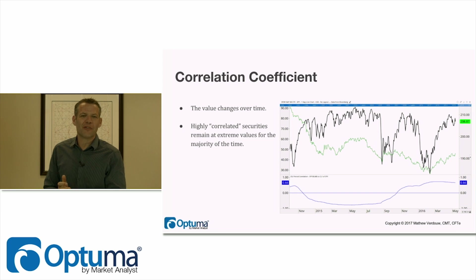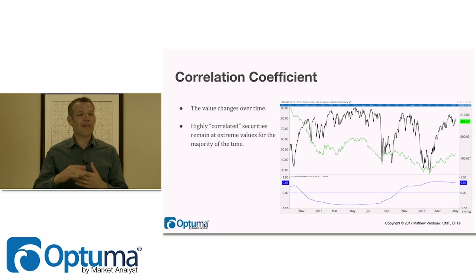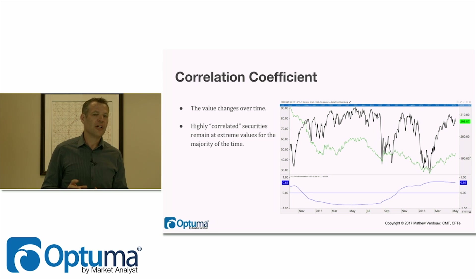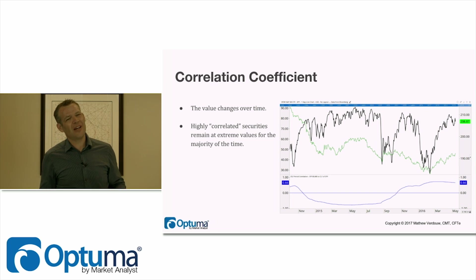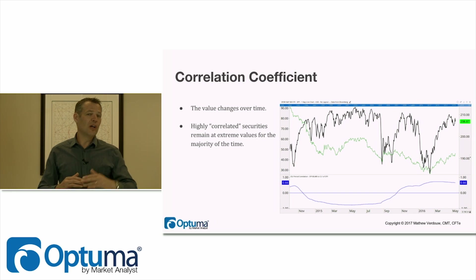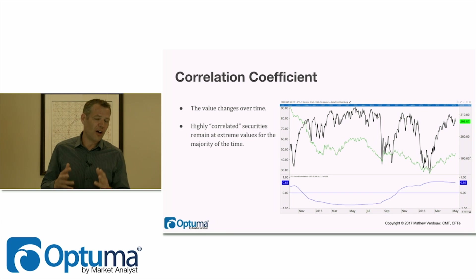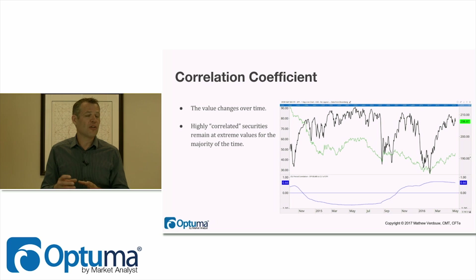Highly correlated securities remain at extreme values for the majority of time. If you're seeing cases where a security is up at one and then down at minus one, you wouldn't call it highly correlated. We're looking for something that stays well above the correlation threshold for the majority of the time before calling it a highly correlated pair, and we can use that as we're building models.